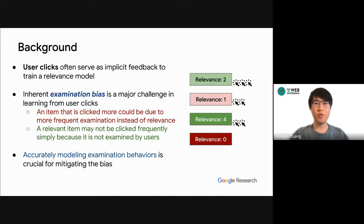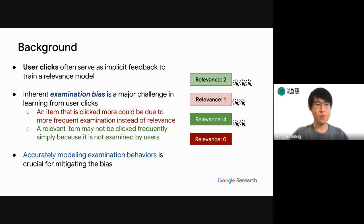User clicks are often used as implicit feedback to train a relevance model. However, there could always be some inherent examination bias in the user click logs that may affect the model quality. For example, an irrelevant item might be clicked more frequently simply because it was shown at a better position, which attracted more user attention, while a relevant item might not be frequently clicked only because it was not seen by the users. So it is crucial to accurately model users' examination behavior in order to mitigate the bias and thereby improve the model quality.